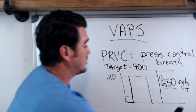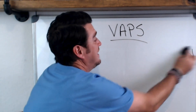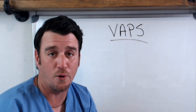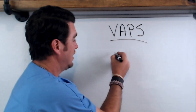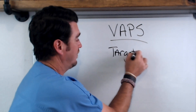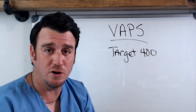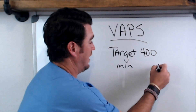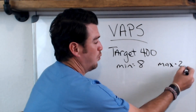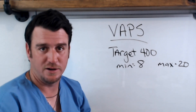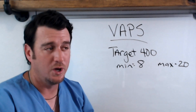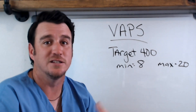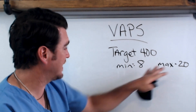With VAPS or volume assured pressure support, it's the same concept except instead of pressure control breaths, it's pressure support breaths. You tell VAPS to give a target tidal volume of 400. You also set a minimum and a maximum pressure support — let's say 8 to 20. You typically won't have somebody in pressure support who needs more than 20; if they need more than 20, they're probably not ready to be in a spontaneous mode of mechanical ventilation.